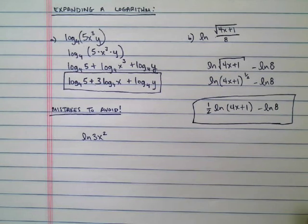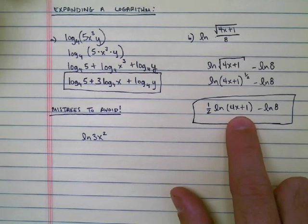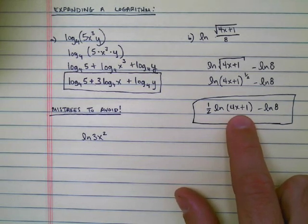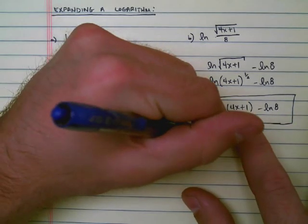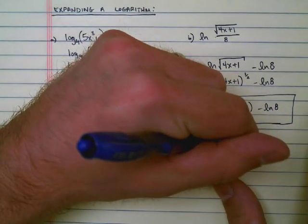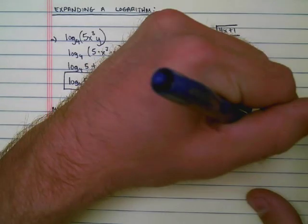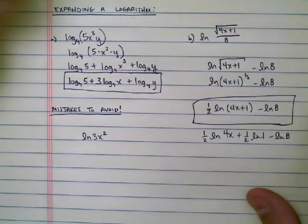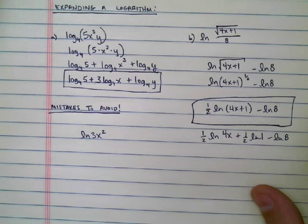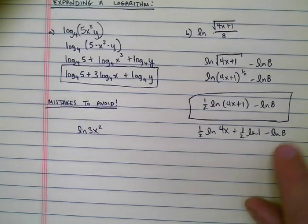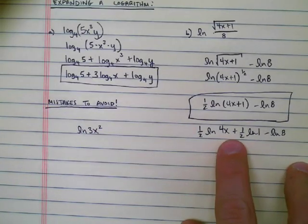This confuses a lot of people because I see this and a lot of people will want to try to break that down even further. Do not make the common mistake of saying this: 1 half natural log of 4x plus 1 half natural log of 1 minus natural log of 8. You can't do that. You can't do that.